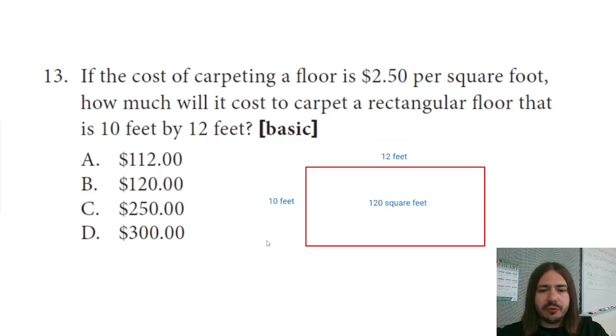So the computation we want to make here is $2.50 times 120 square feet. Okay, so let's go ahead and type that in our calculator. Make sure we get the right answer, and I'm getting 300.